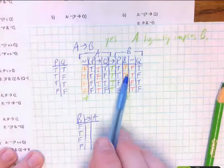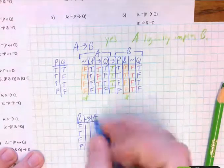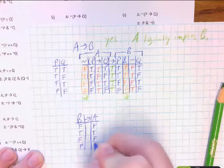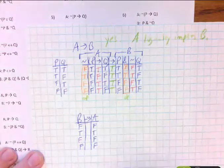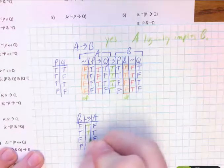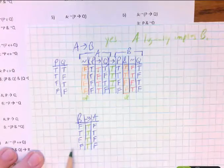False, true, false, false is B. A is false, true, false, false. False, true, false, false. And now I'm just comparing those. True, true, true, and true. I have another tautology for B implies A.